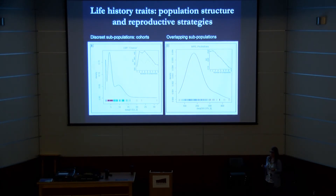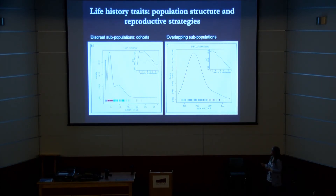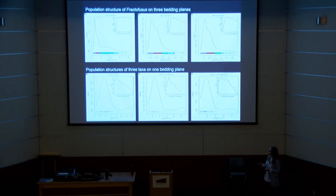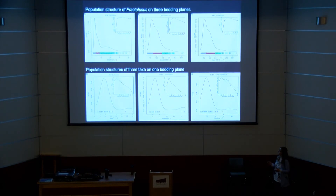Blurred population structures can form in a number of different ways. We can also test the trends we see on different surfaces by looking at the same taxon across different surfaces to see if we get the same sort of pattern - which at least for Fractifusis we do.